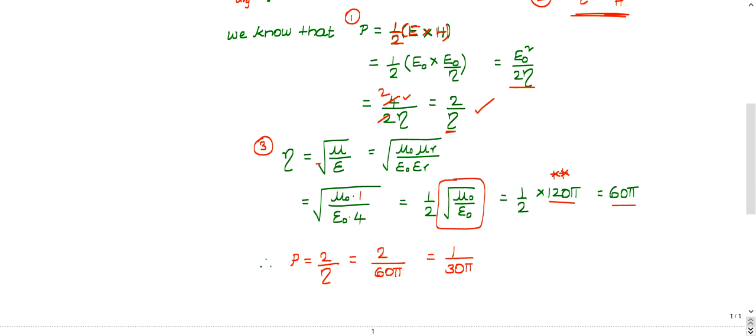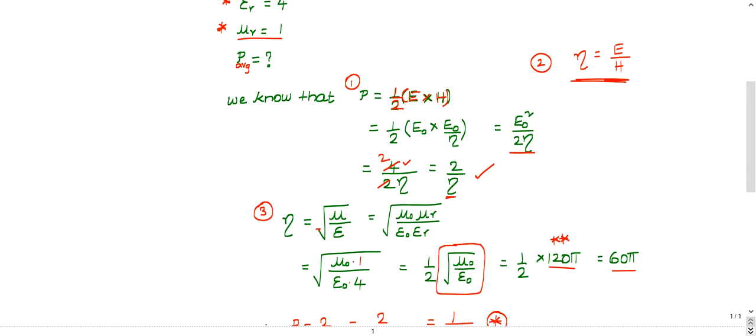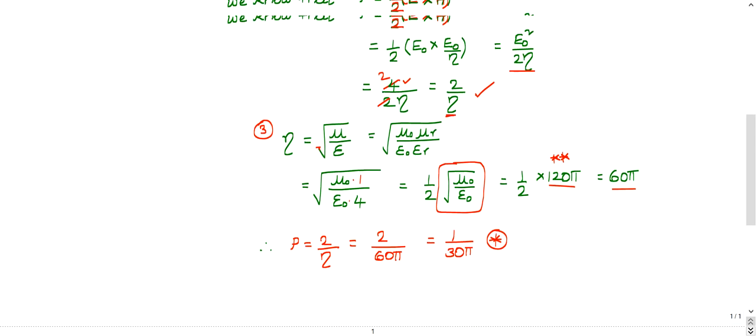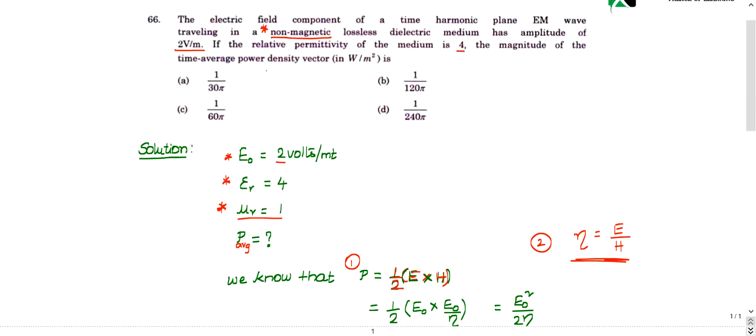Finally, what is power? 2 by η, 2 by 60π. It is nothing but 1 by 30π. This is a direct formula based question. If you can know these three formulas, you can solve this question within no time. The right choice is 1 by 30π. Option A is the right choice.